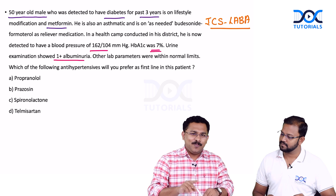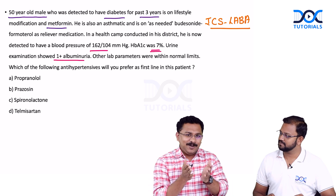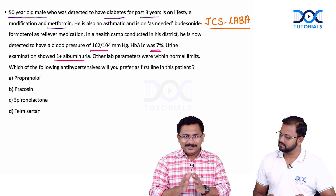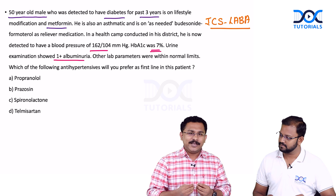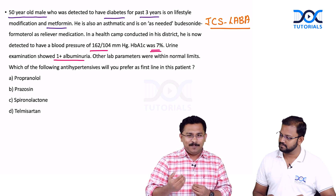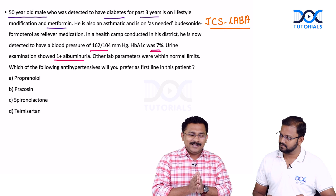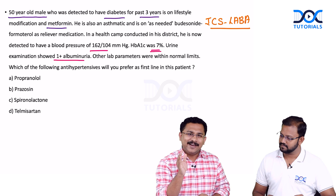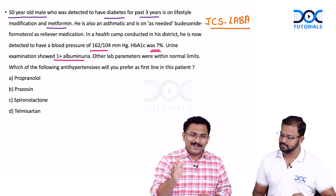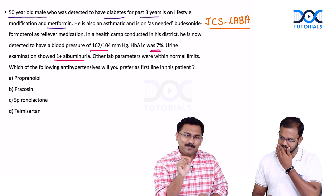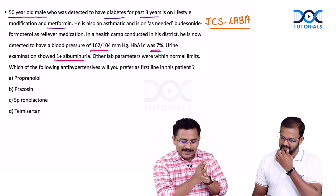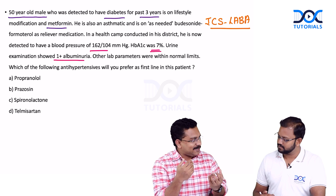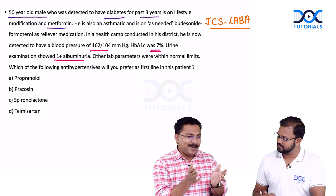This is a common clinical scenario about the choice of antihypertensives in different clinical settings. This patient is a newly detected hypertensive, and you have to start medication. As a first line, always have a look at the whole case scenario. This patient is diabetic for the past 3 years and the HbA1c is on the higher side, indicating it is not well-controlled diabetes.